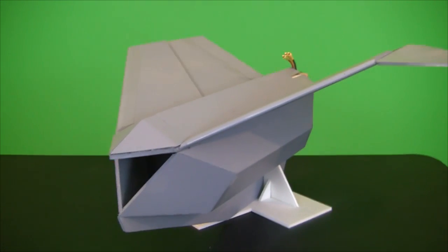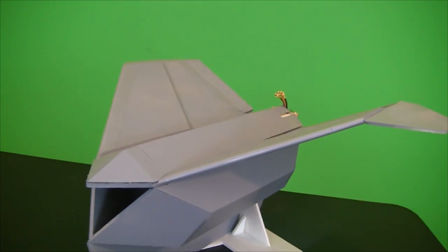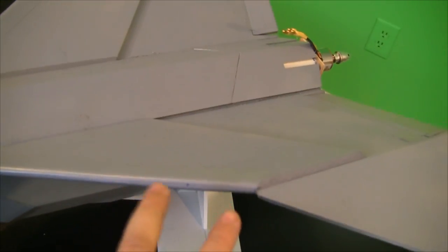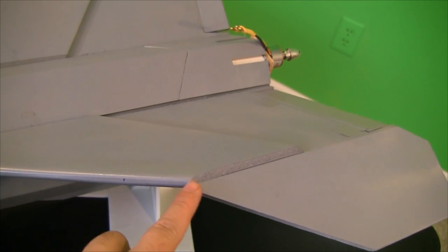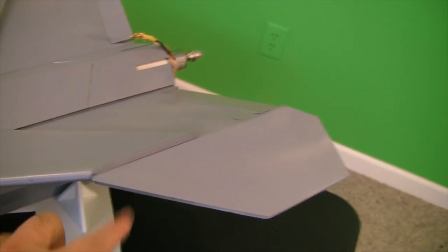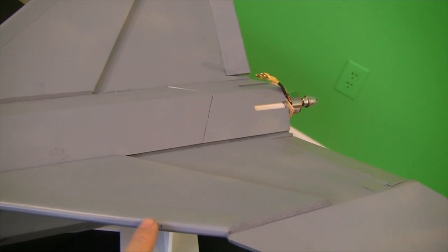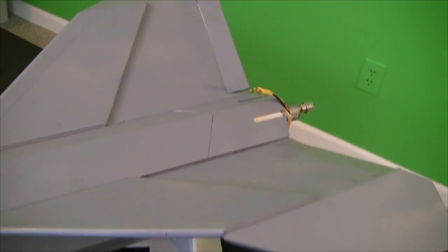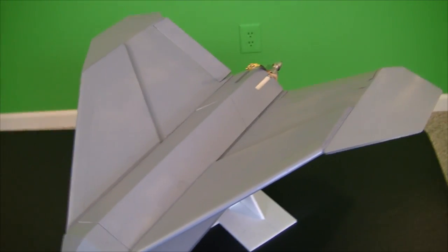I did do a couple glide tests with it before I painted it up. The CG, or where it would glide okay, was coming out about two inches forward of where this bend is in the wing. So I just measured up two inches and then basically straight across. Right now that's where the CG is going to be.